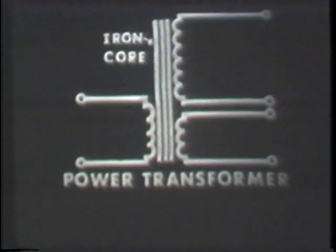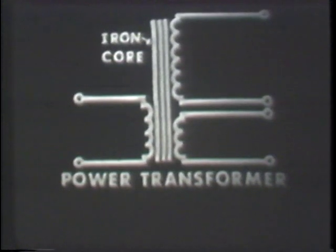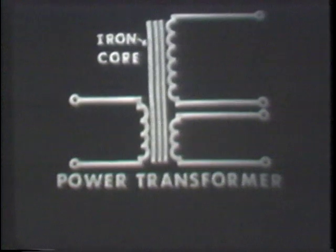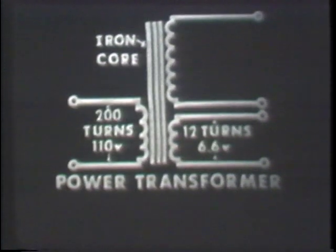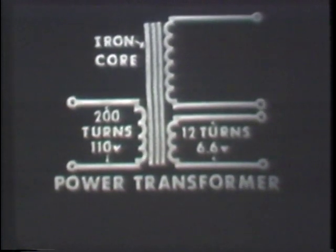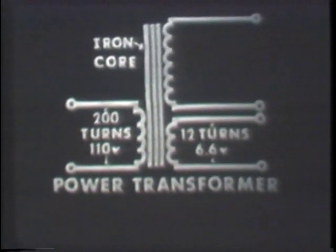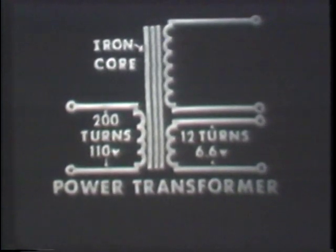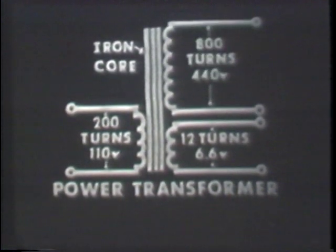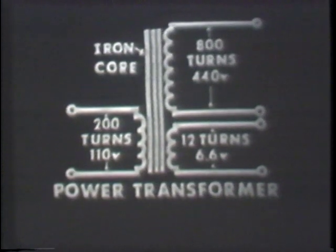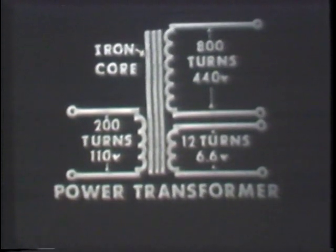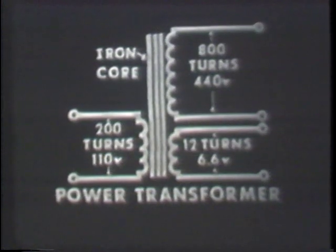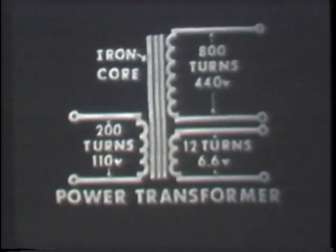You'll notice that each secondary has a different number of turns. One of the secondaries has fewer turns than the primary; therefore, it produces less voltage than that applied to the primary. The other secondary has more turns and thus produces more voltage. You'll also notice that the power transformer is constructed with an iron core.